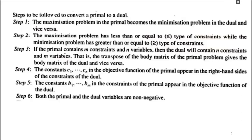Number three: if the primal contains m constraints and n variables, then the dual will contain m variables and n constraints. To obtain the dual from the primal, you transpose the body of the matrix. The constants c1 up to cn in the objective function of the primal appear in the right-hand sides of the constraints of the dual.